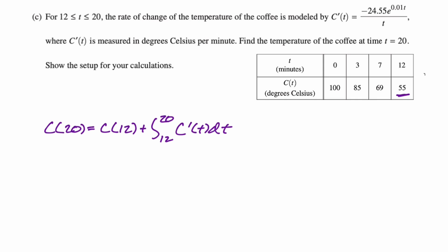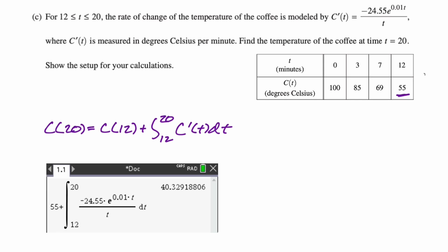This is clearly a calculator question because I don't know how you're integrating that thing. So I just went to the calculator. I typed it in like this. You can see what I did. Hopefully I typed that in correctly and I got approximately three decimal places, 40.329.